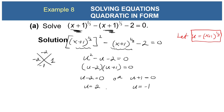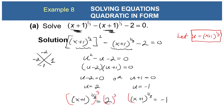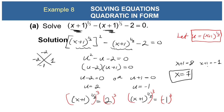Remember, you can't leave it in terms of u — convert back. Since u = (x+1)^(1/3), replace u: (x+1)^(1/3) = 2 and (x+1)^(1/3) = -1. Raise both sides to the power 3: x + 1 = 8, so x = 7; and x + 1 = -1, so x = -2. Both solutions are good — double check by plugging back into the original equation.